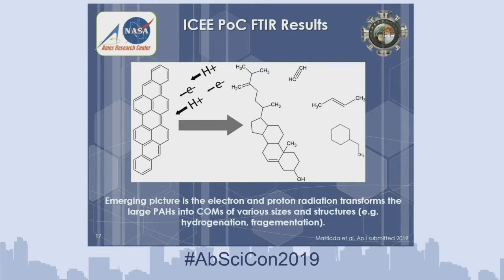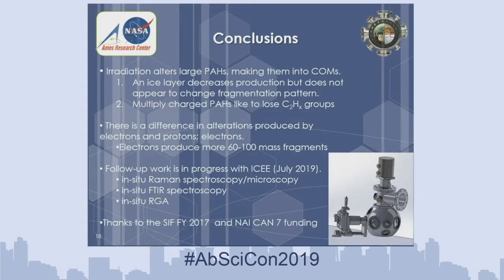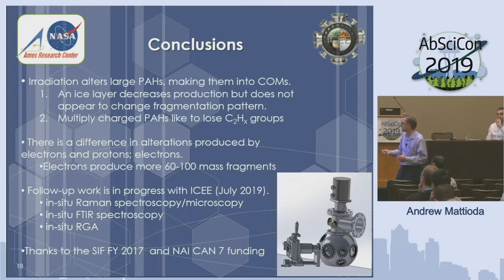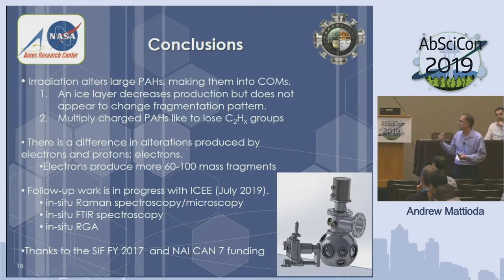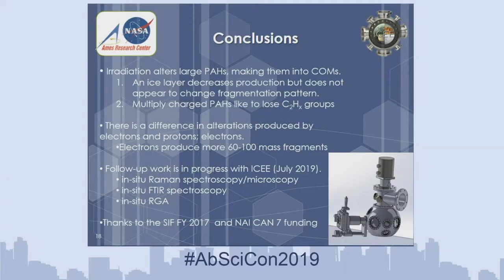So what we figure is going on is that we're taking the PAH, hitting it with protons and electrons, and creating all these interesting structures such as acetylene and other groups. If you start digging through the mass spectra, you see a lot of complicated stuff going on. So we're processing the PAHs and creating all these other organics from it — from a top-down approach versus a bottom-up approach. These are preliminary results and we're going to do a lot more work. In conclusion: radiation processing does fragment the PAHs and modifies their chemistry, giving you a whole complex mixture of smaller molecules. There is a difference between the electron, proton, and UV radiations. We're building a new system called ICI, starting in July, where we'll be able to do in situ measurements during irradiation with Raman spectroscopy, IR spectroscopy, and the RGA.